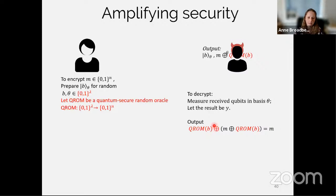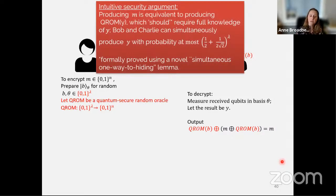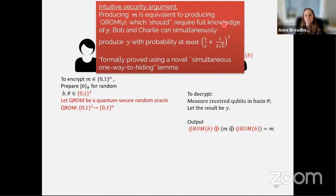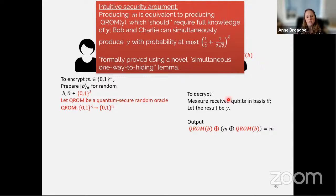The idea for unclonable encryption is to amplify this using the quantum random oracle. The QROM maps a lambda-bit string to an n-bit string. We create a conjugate coding state and force the adversary to know a longer string in order to encrypt a shorter string. The ciphertext is m XOR QROM(b), and when the key is revealed, to decrypt we compute QROM(b) and then XOR with m XOR QROM(b) to reconstruct m. The intuitive security argument is that producing m is equivalent to producing QROM(y), which requires full knowledge of y.